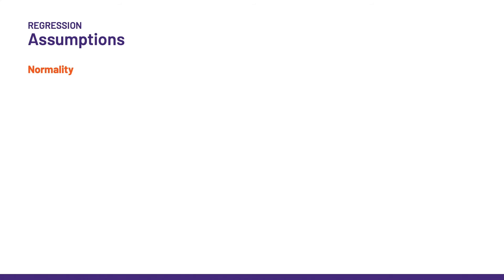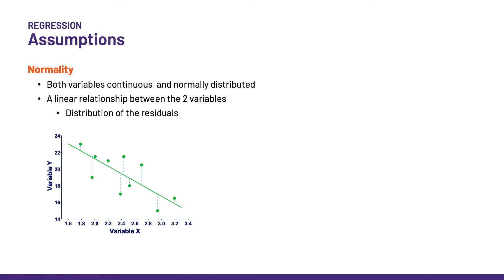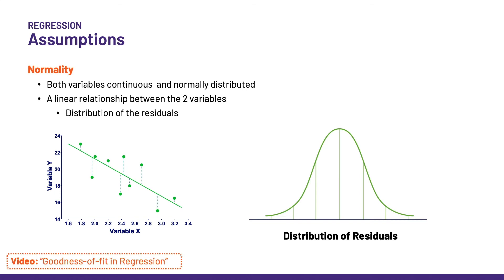Basically, we have to think about normality. Both variables should be continuous, of course, and normally distributed. And since we are drawing a line between x and y, well, it's important that there is a linear relationship between the two variables. And to check that, we can go back to the residuals. If our model is the right one, then we should expect the values to be kind of symmetrically distributed on either side of the line, which would translate if we were to actually plot the residuals into a normal distribution. I talk more about it in the video on goodness of fit, by the way.